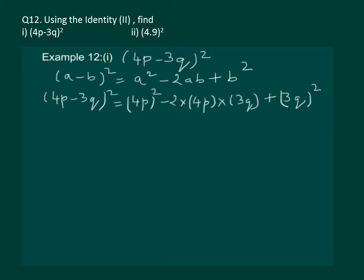Substituting a as 4p and b as 3q in the identity, we get the following expression. Now, let's solve it further. Here, we get 16p square minus 24pq plus 9q square, which is the required answer.